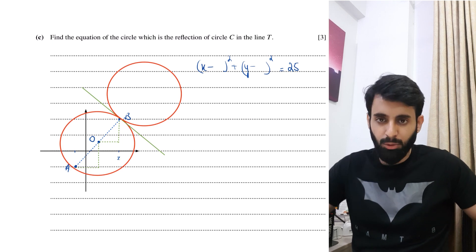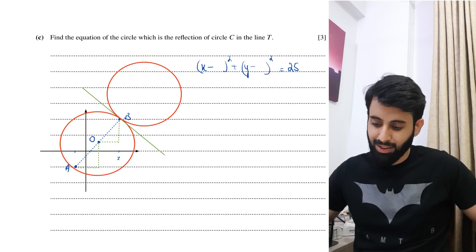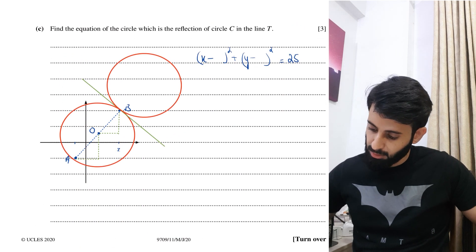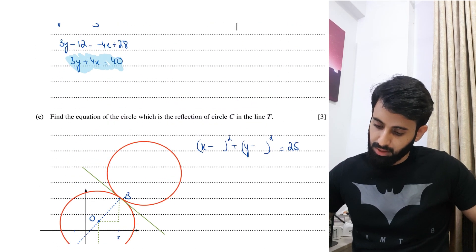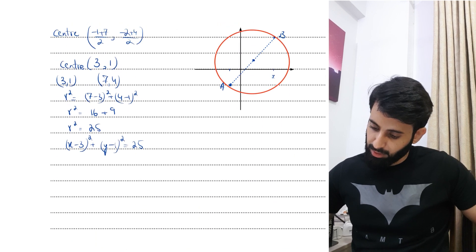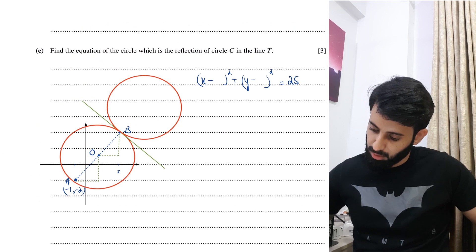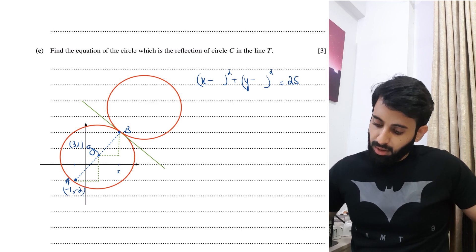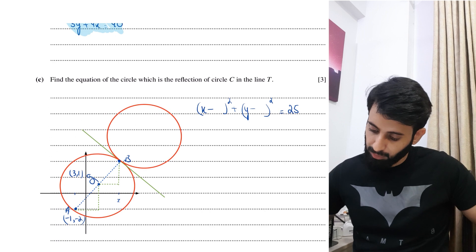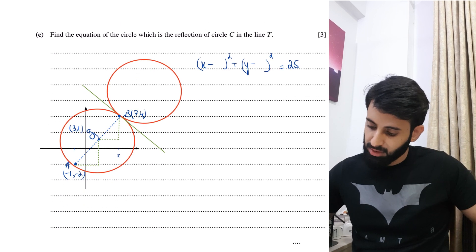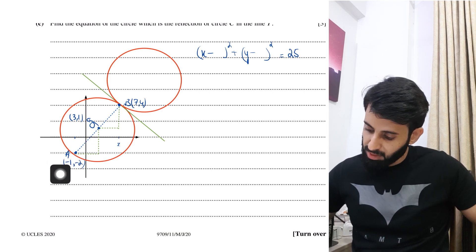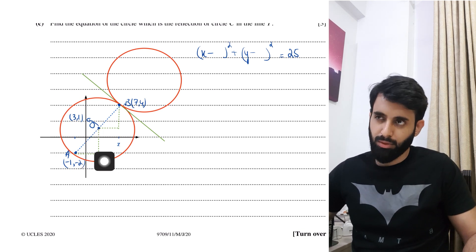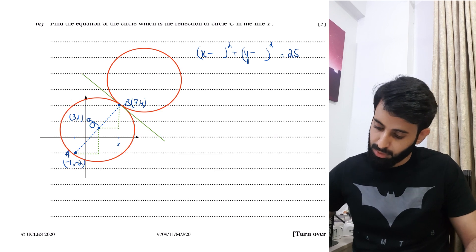Point A is at minus 1, minus 2 and center O is at 3, 1. Going from A to O: from minus 1 to 3 is 4 units right, and from minus 2 to 1 is 3 units up. Checking O to B: from 3 to 7 is 4 right, and from 1 to 4 is 3 up — exactly the same movement, confirming it.